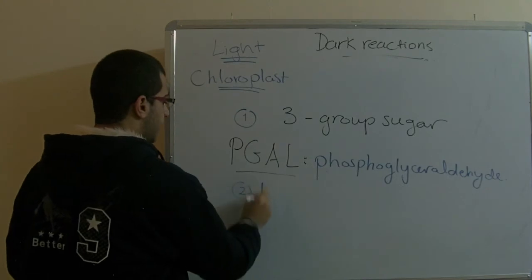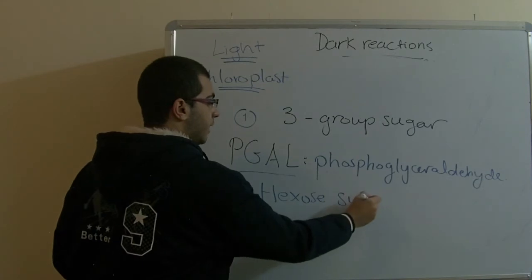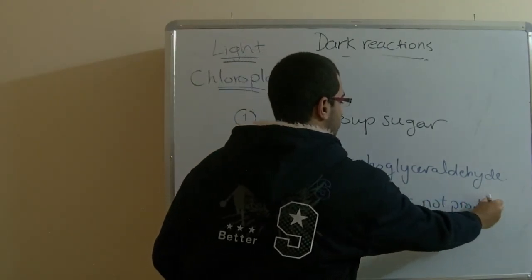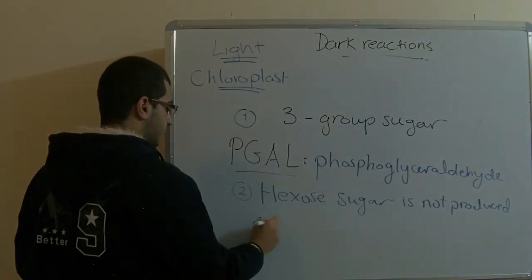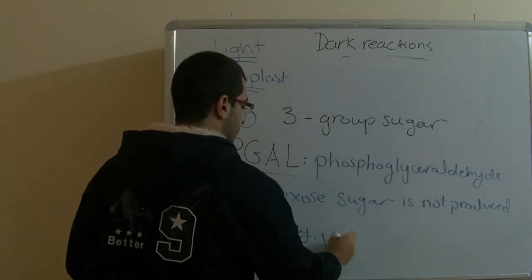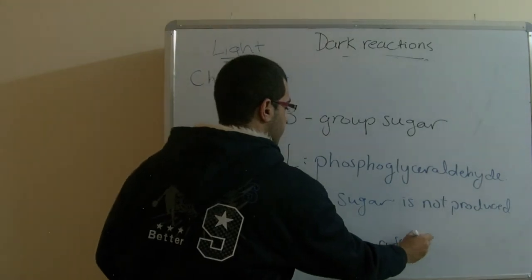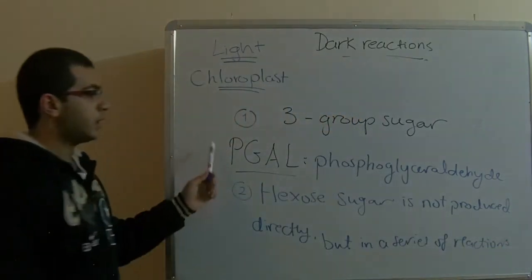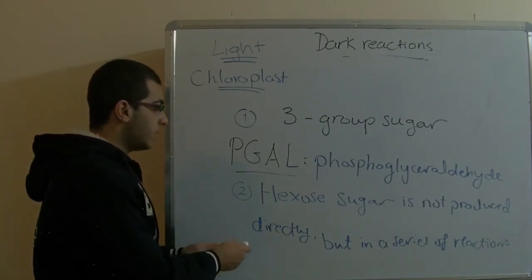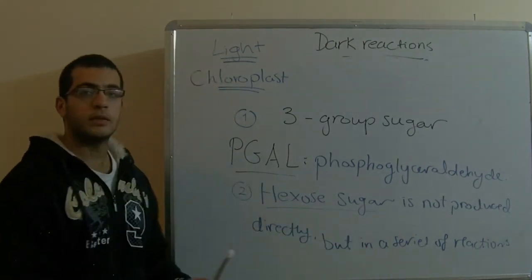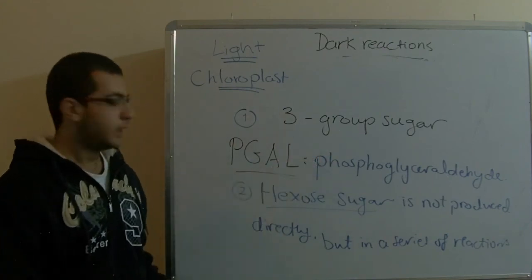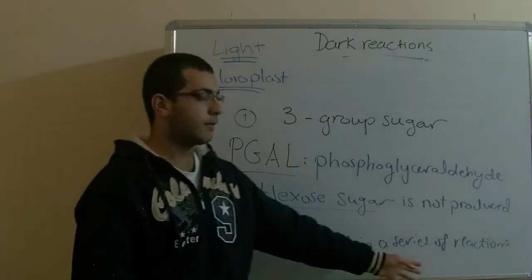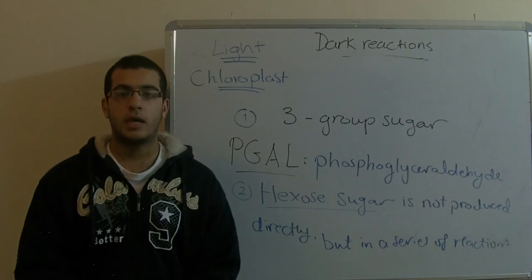His second conclusion is that hexose sugar — the final sugar of the biosynthesis pathway — is not produced directly, but through a series of reactions. So PGA-L is the first product of the dark reactions, and hexose sugar, which contains six carbon groups, is the last product. It is not produced directly, but passes through a series of reactions and certain conditions to be produced.